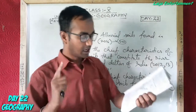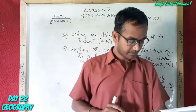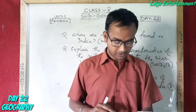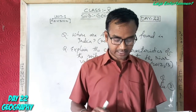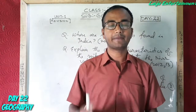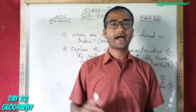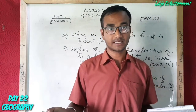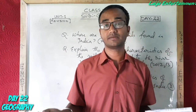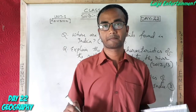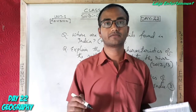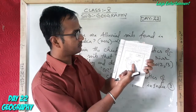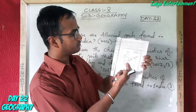This is a delta region. The deltas of the Mahanadi, Godavari, Krishna, and Kaveri rivers also contain alluvial soils.